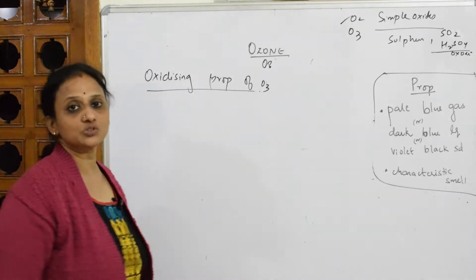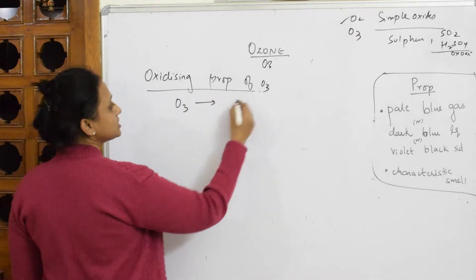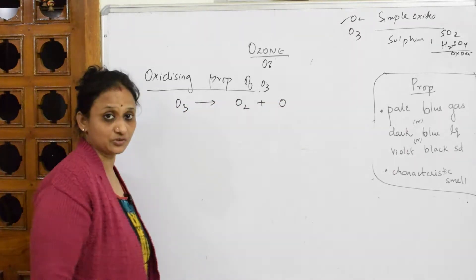So now let us learn the ozone properties or oxidizing properties. Why is ozone as we said? Ozone dissociates into oxygen plus nascent oxygen done.